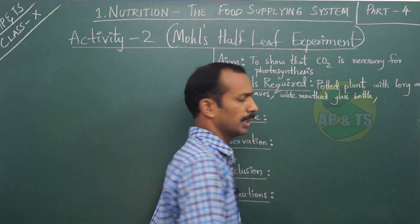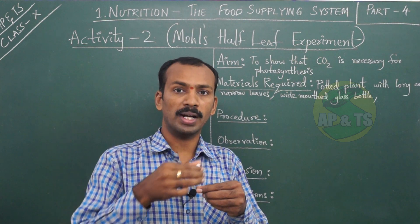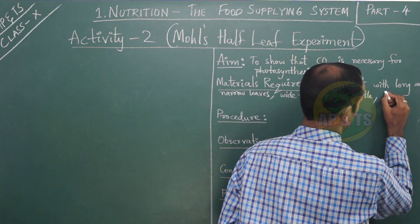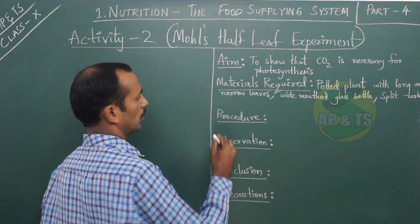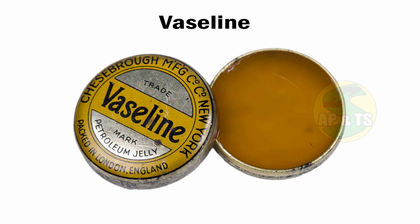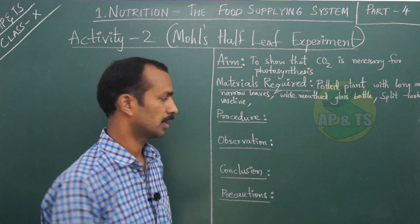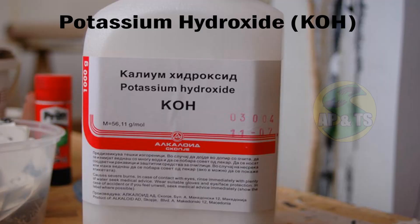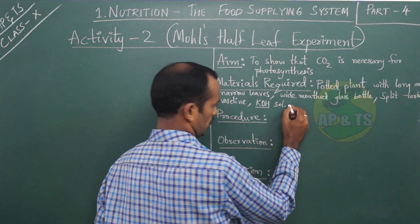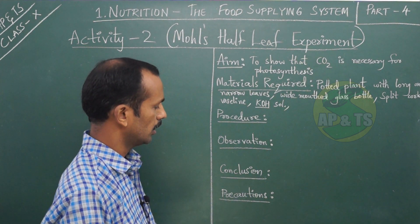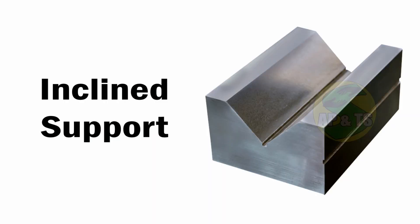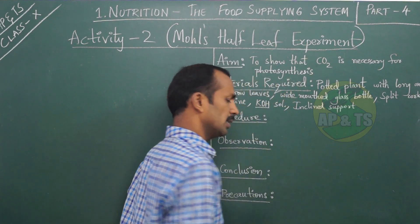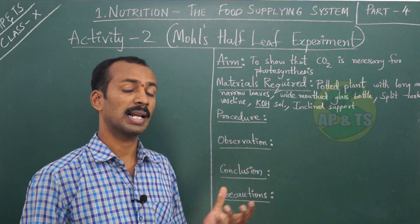A wide-mouthed glass bottle - a glass bottle which has a wider mouth. Then split cork, then vaseline, then KOH solution - KOH means potassium hydroxide. And finally an inclined support - a slanting support for the glass bottle.